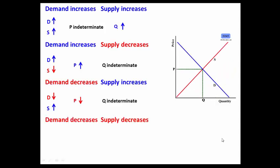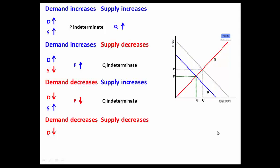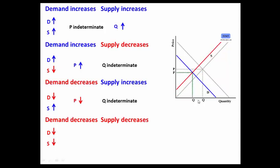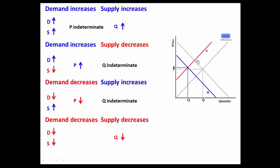Demand decrease and supply decrease. As demand decreases, notice price and quantity go down. As supply decreases, watch what happens to quantity — quantity keeps going down. But let's see what happens to price. Notice that price is below the equilibrium, gets to the equilibrium, or it's above the equilibrium. So we say in this situation that price is indeterminate.